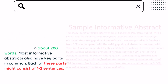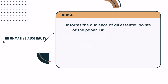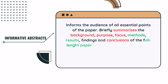An informative abstract informs the audience of all essential points of the paper, and briefly summarizes the background, purpose, focus, methods, results, findings, and conclusions of the full-length paper. The paper is concise, usually 10% of the original paper length, often just one paragraph.